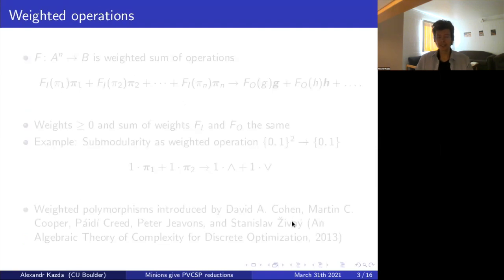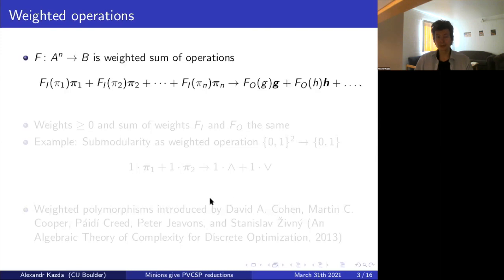In the study of CSP you've probably heard about the algebraic approach, which means studying operations that are compatible with relations on the structure. So what are weighted operations? I'm going to use my version of them, which is not that different from what other people have been doing. I'm definitely not the first one to talk about weighted operations. A weighted operation will be a weighted sum: I give weights to projections — that's the F_i — where F_i is some non-negative number for each projection.